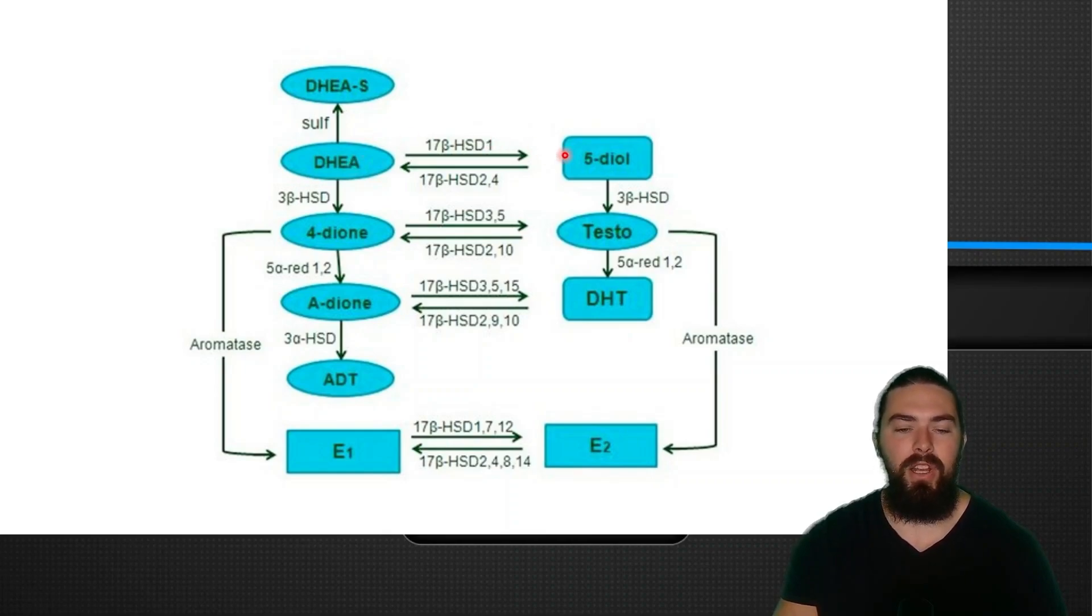So when you use a lot of electron acceptors, you're going to deactivate your potent androgens, like testosterone back into androstenedione, which is a very weak androgen. DHT is going to be deactivated into androstanedione, which is a much weaker androgen than DHT. So therefore, you do not want to deplete your NADPH.